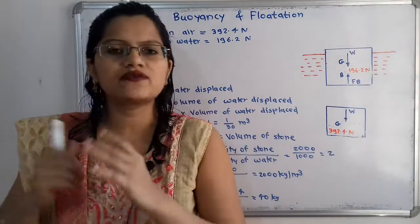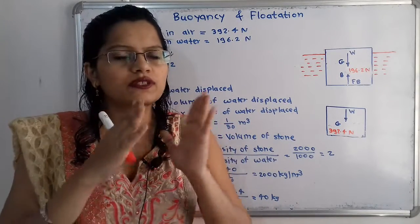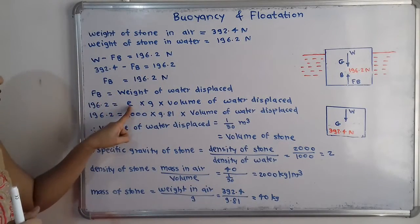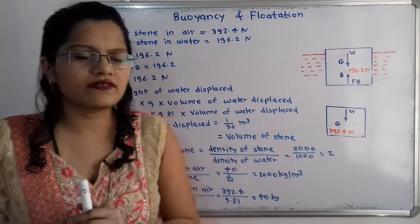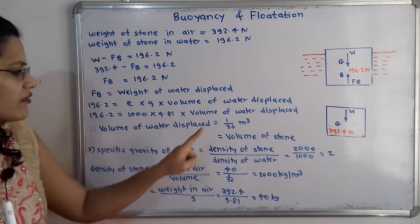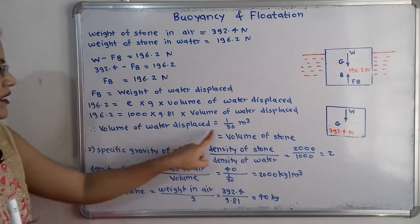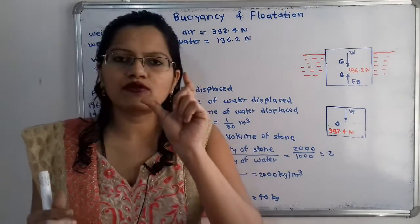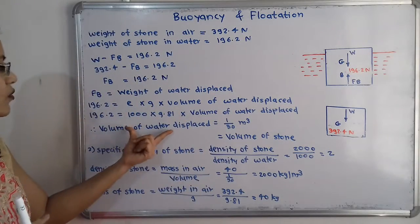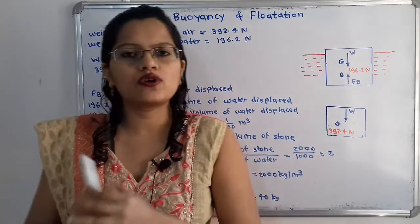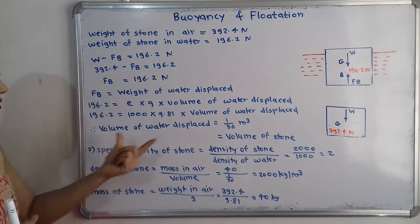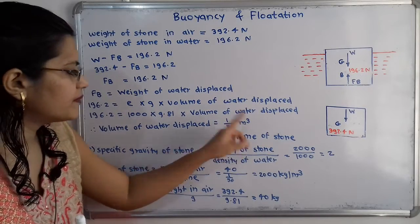The weight of water displaced = 196.2 N. Using the formula: weight of water = ρ × g × volume of water displaced, where ρ = 1000 kg/m³ and g = 9.81 m/s². Substituting all values, the volume of water displaced = 1/50 m³, given in standard units of meter cube. Since the stone is fully immersed, volume of water displaced equals volume of stone = 1/50 m³.